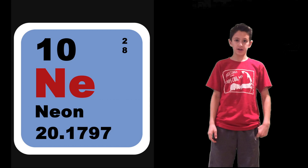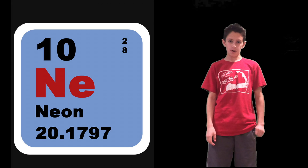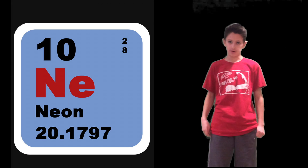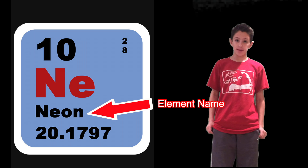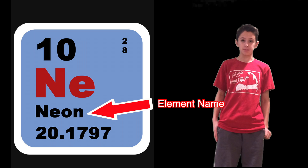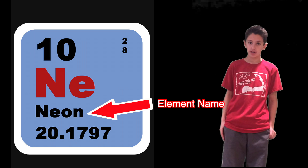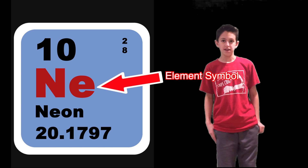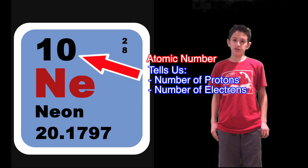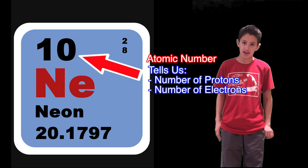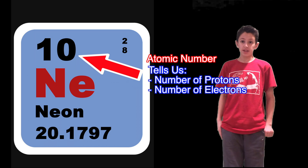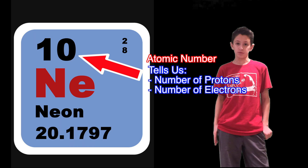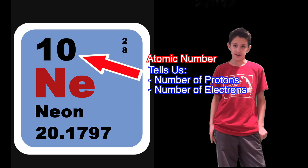Neon's periodic table of elements box can give us a few facts about it. Its element name is neon, and its element symbol is Ne. Its atomic number is 10, which gives us the number of protons and electrons, which will both be 10.